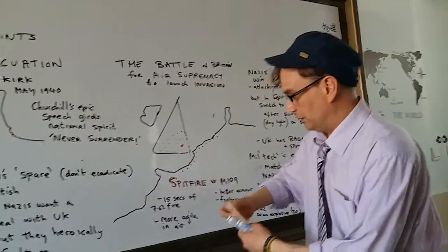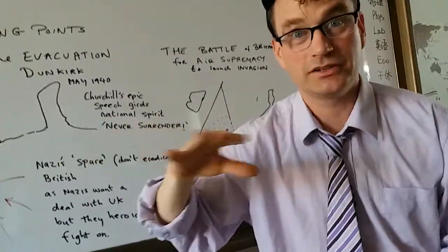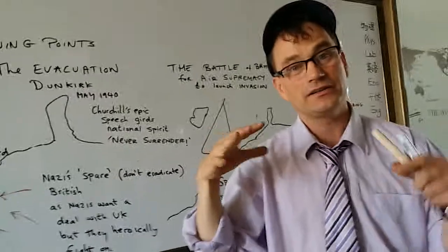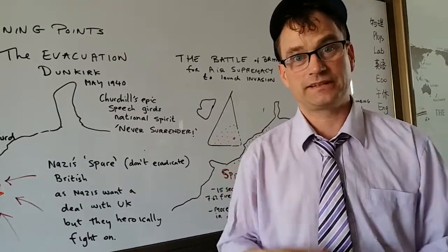The Germans have only got like 30 minutes over Southern England before they run out of fuel and have to get back. So that limits their operational ability to inflict damage. Whereas the British, they can just go down quick.